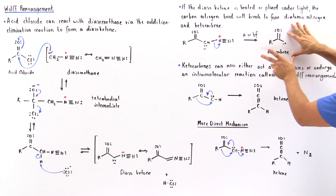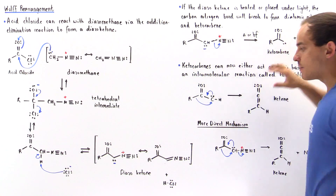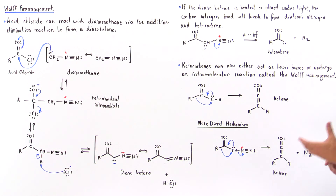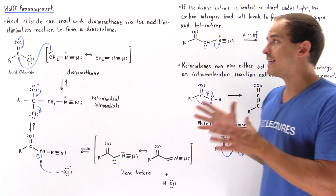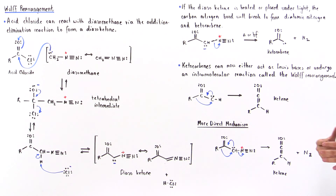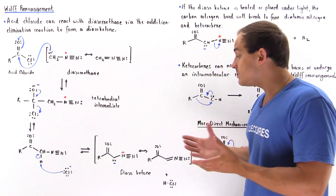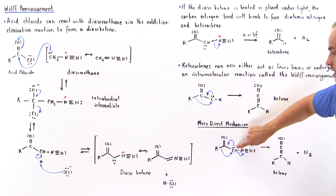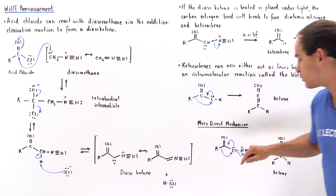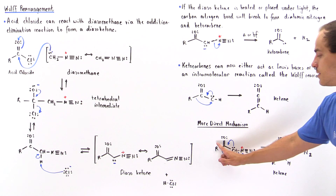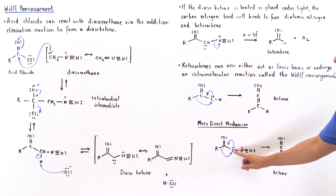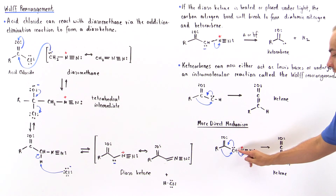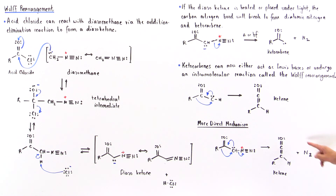To form the ketocarbene via this mechanism, we must follow the full reaction sequence to form our diazoketone first, and then the diazoketone transforms into our ketocarbene. Another possible reaction mechanism — the more direct mechanism — begins with the diazoketone directly. Here, the two electrons on the carbon of the diazoketone form a pi bond between this carbon and the adjacent carbon; the R group migrates onto this carbon, kicking off the weak carbon-nitrogen bond, which breaks to form diatomic nitrogen and our ketene.